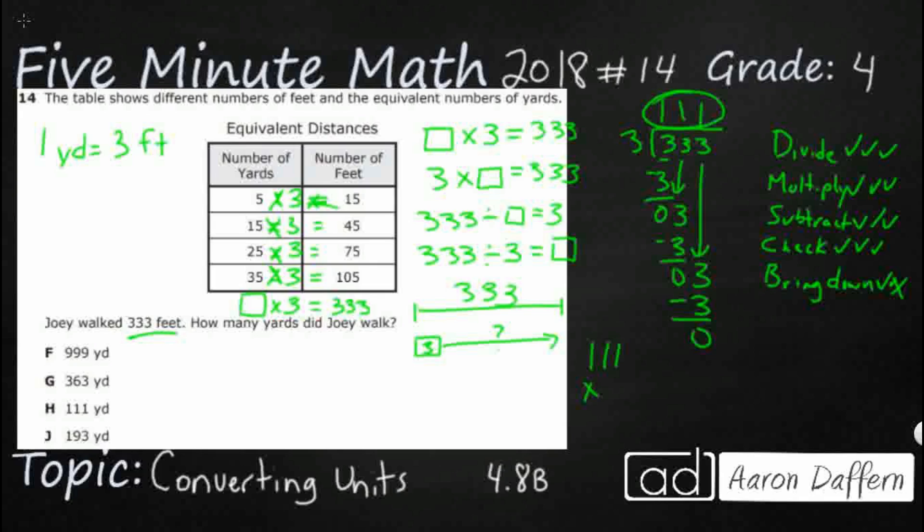And that makes sense if I were to multiply it. 3 times 1 is 3. 3 times 1 is 3. Some of you might have seen that before we did the division, but at least we checked it. Our answer here is going to be H, 111 yards.